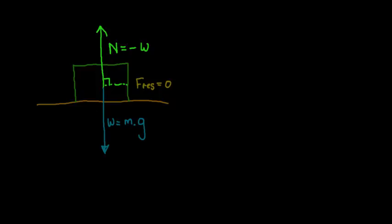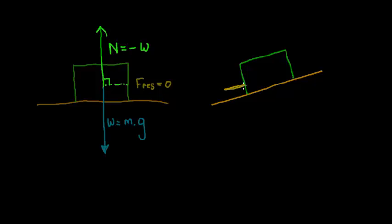Now what is going to happen if we actually lift up the surface? If you put something on a surface and slant it, at some point the object is going to start to slide down. Let's imagine that surface is super smooth, so that even if you lift it slightly, the object will start sliding down. We've said that if that object starts sliding down, it means there is a force in the direction of the slope - down the direction of the slope. Why have we gone from a resultant force of zero to suddenly a resultant force acting down the slope?